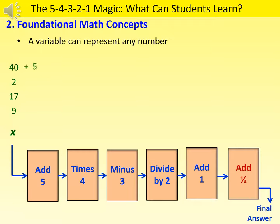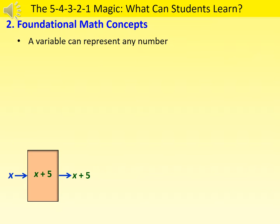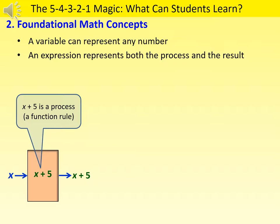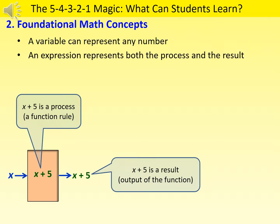Operating on a number gives us a new number. Operating on a variable, on the other hand, gives us an expression. It is important to know that an expression has two meanings: a process and a result. For example, the expression x plus 5 simultaneously represents the process of adding 5 to x, as well as the result, which is the sum of x and 5.